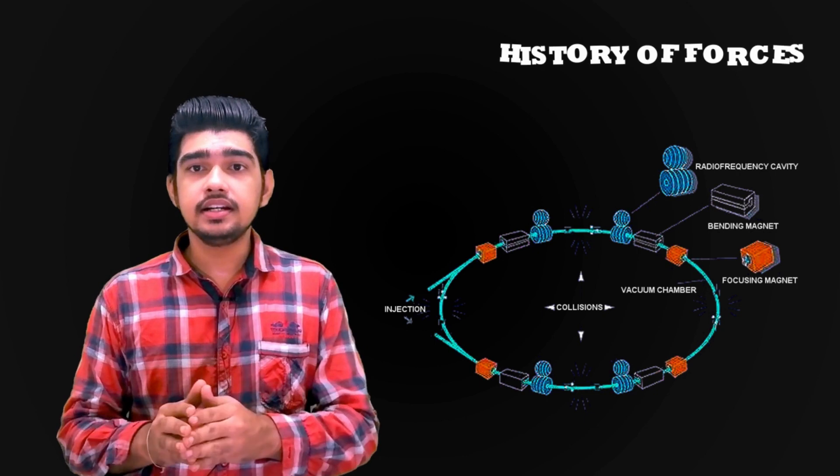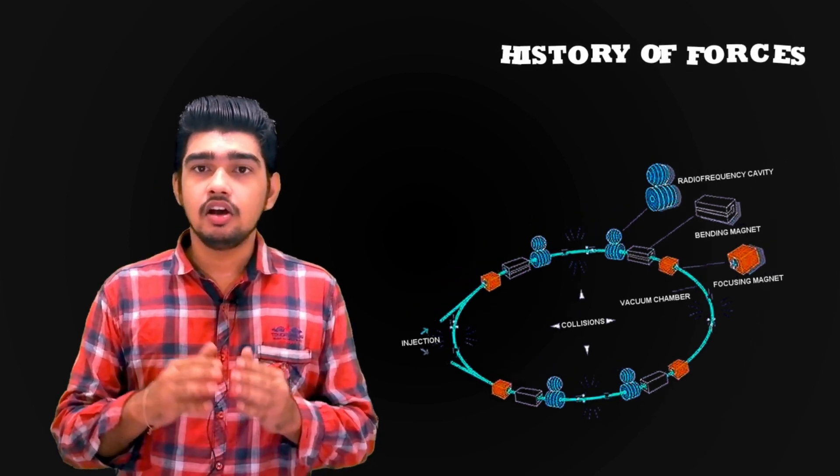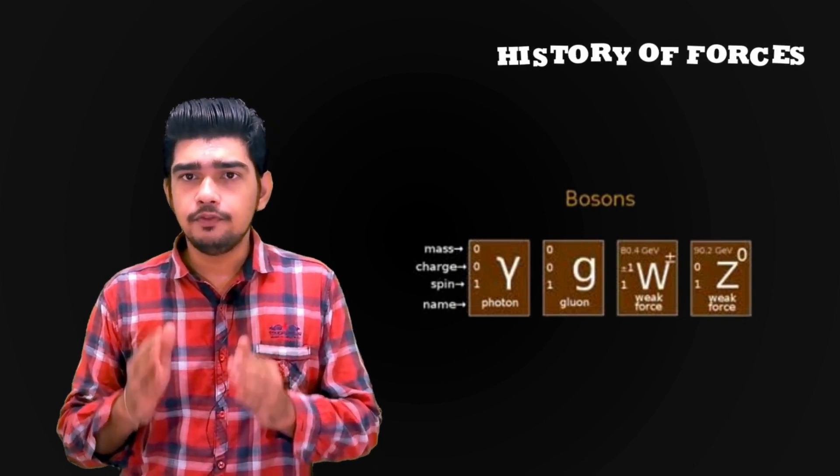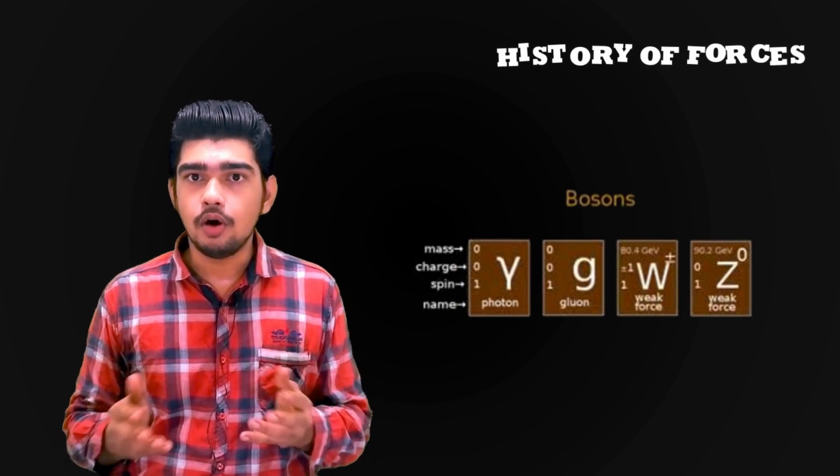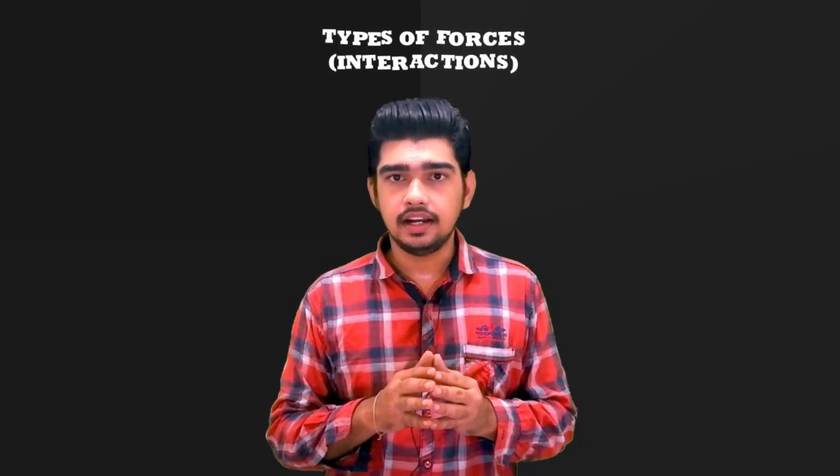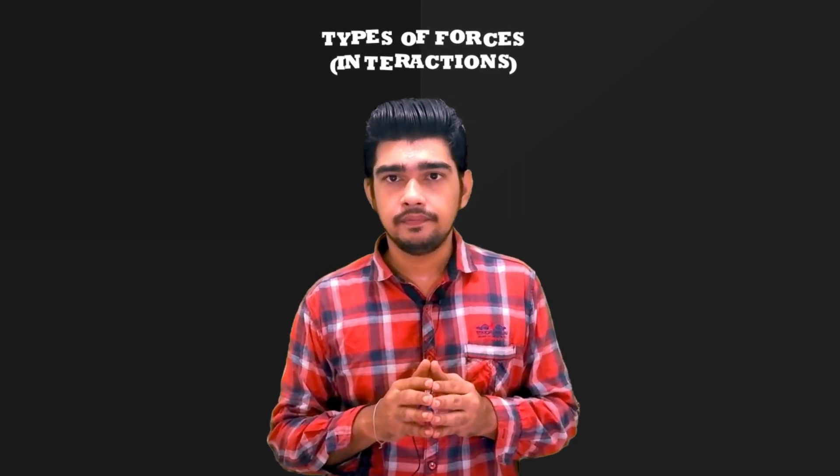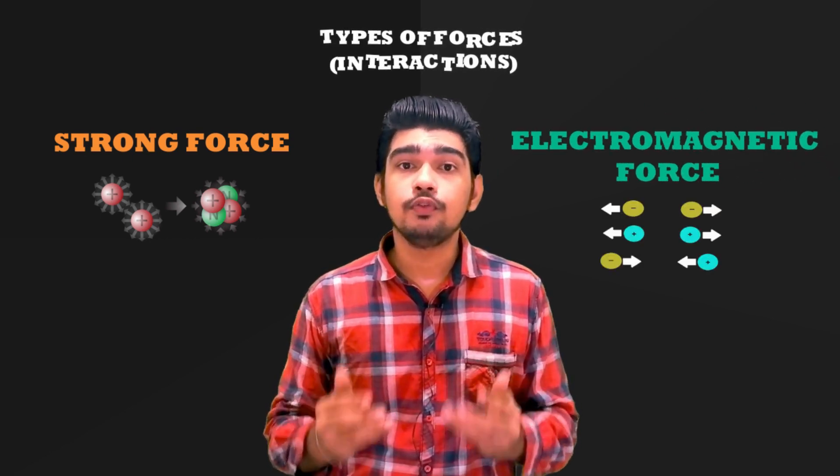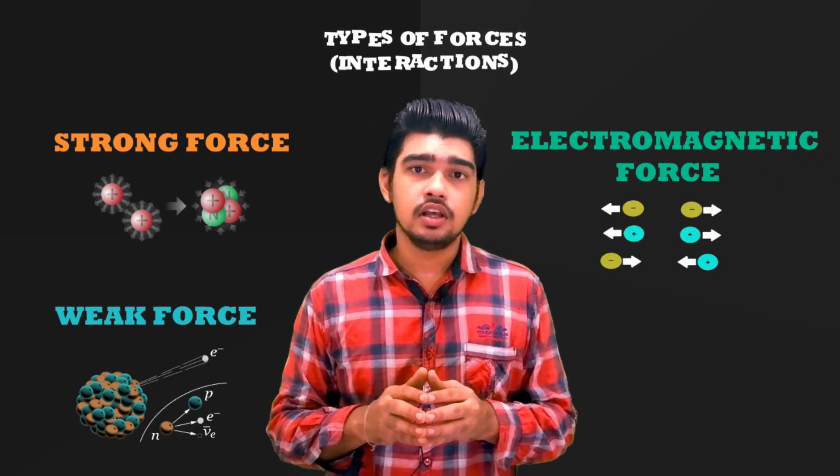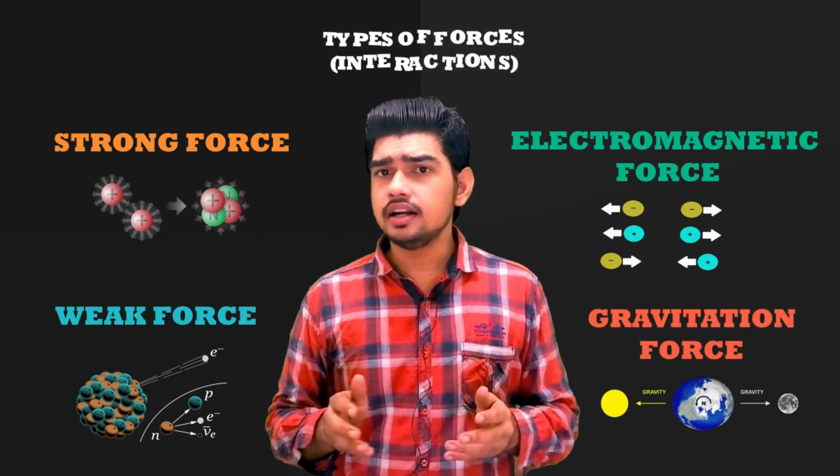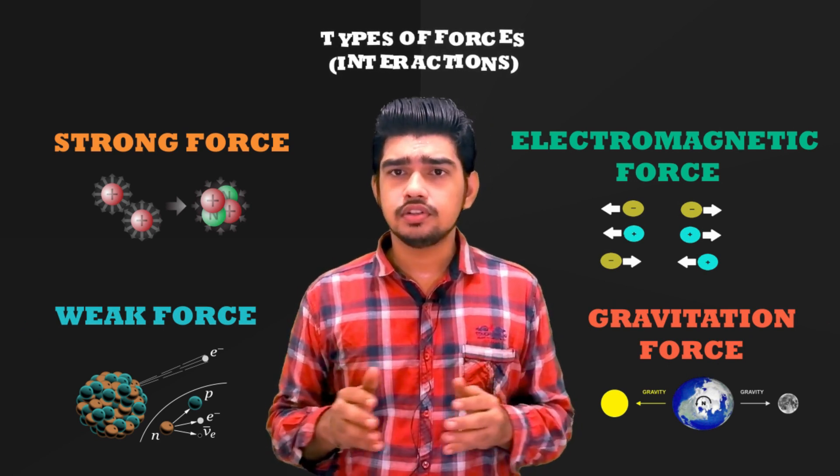The standard model predicts that exchanged particles called gauge bosons are the fundamental means by which forces are emitted and absorbed. Only four main interactions are known. We can classify forces into four main categories: strong force or nuclear force, electromagnetic force, weak force, and gravitational force. Let us look at these forces one by one.